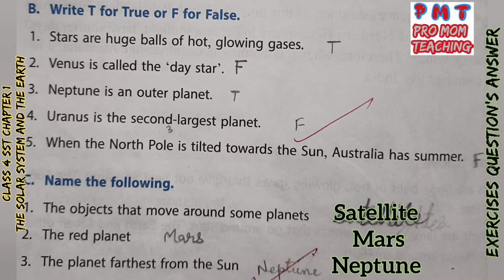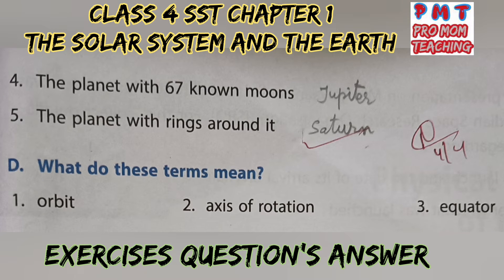Name the following. Question 1: The objects that move around some planets are known as Satellites. Question 2: The Red Planet — Mars. Question 3: The planet farthest from the Sun is Neptune. Question 4: The planet with 67 known moons — Jupiter. Question 5: The planet with rings around it is Saturn.